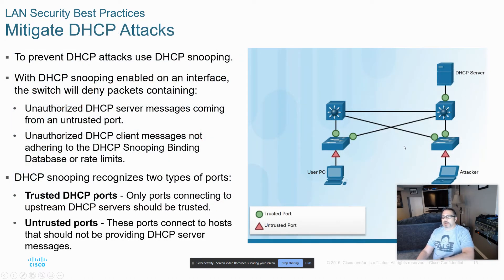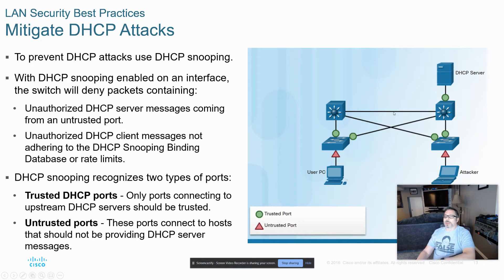For DHCP, here's a diagram showing that only the downstream ports from the server will be set as trusted — those are the green ones. The client-side ports would all be set to untrusted, preventing any client from acting as a rogue server because those ports will not allow any DHCP offers to go through. We're also going to set rate limits on these client-side ports to stop the number of DHCP requests they could send, essentially preventing them from starving the server of all available IPs.